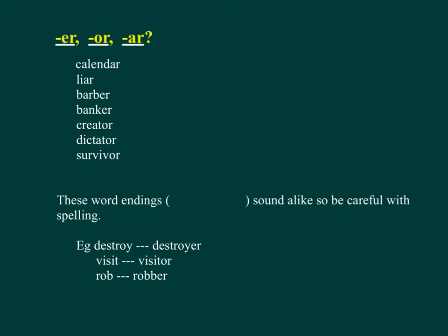Examples of ER, OR, and AR endings: Calendar, Liar, Barber, Banker, Creator, Dictator, Survivor.